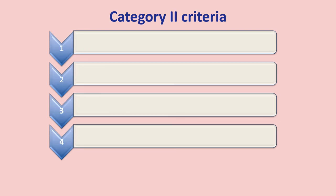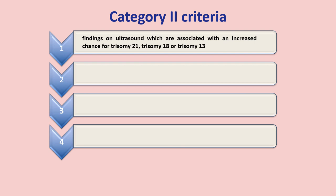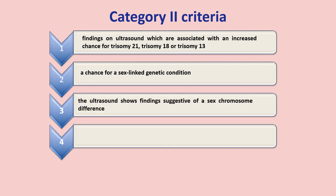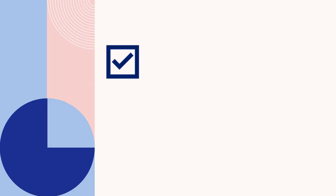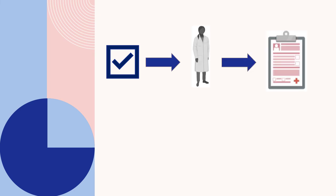Category 2 criteria must be ordered by a genetics or maternal fetal medicine specialist, and includes: ultrasound findings associated with an increased chance for Trisomy 21, 18, or 13; a chance for a sex-linked genetic condition; ultrasound findings suggestive of a sex chromosome difference; or ultrasound findings suggestive of a disorder of sex determination. If you meet one of these requirements, your healthcare provider can use the OHIP-funded requisition for testing.